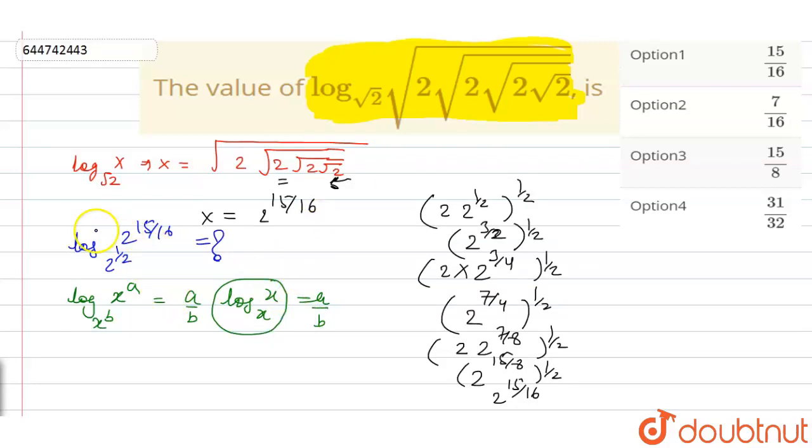We can write the value of this expression as 15 upon 16 divided by 1 upon 2 and this is log 2 base 2. This will become 15 upon 16 into 2, so we can write this as 15 upon 8 and the final answer is option number 3 to the given problem.